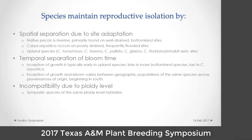Our species maintain reproductive isolation partially by spatial separation due to site adaptation. Native pecan is riverine and occurs along rivers and bottomland sites. Carya aquatica occurs in very poorly drained, frequently flooded sites, and upland species are on dry xeric sites. We also have temporal separation in bloom time. Inception of growth impacts date of bloom, and aquatica often sheds pollen well after any other species it could cross with has been receptive. Inception of growth in bloom varies between geographic populations, creating some isolation even between populations. Primarily, incompatibility is due to ploidy level.